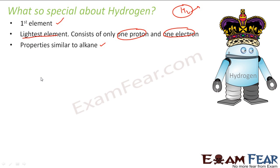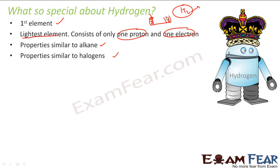Hydrogen has properties similar to the alkali metals — Group 1 elements like lithium, sodium, and potassium. But it also has properties similar to halogens — elements like chlorine and iodine in the halogen group. That is why it was really difficult to place hydrogen in the periodic table. Let's understand that hydrogen has properties similar to both Group 1 and the halogens.